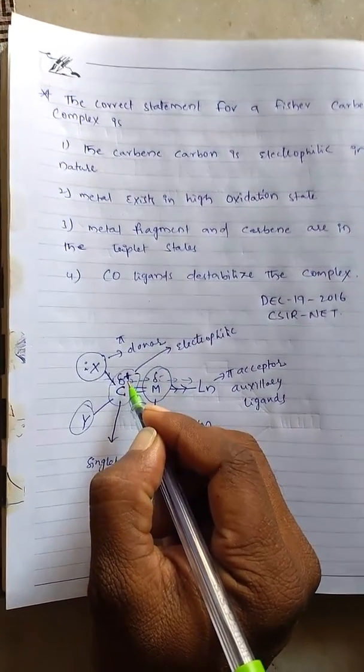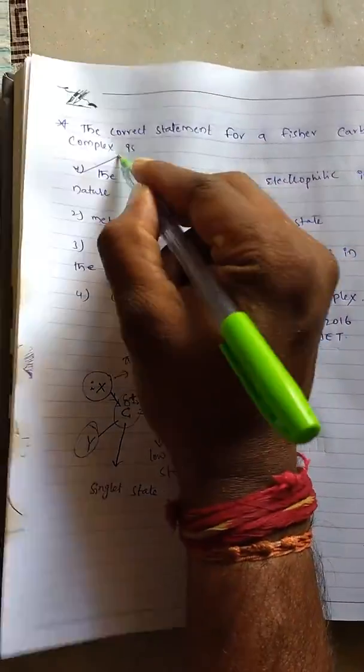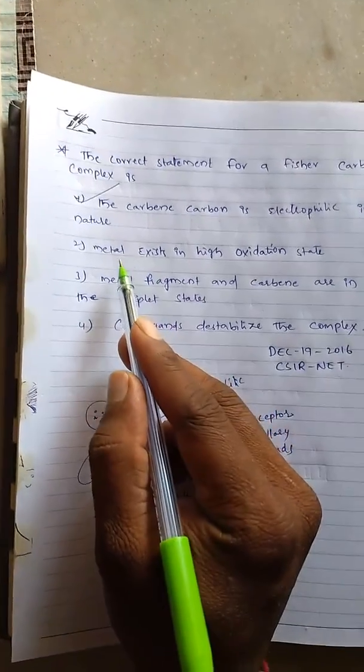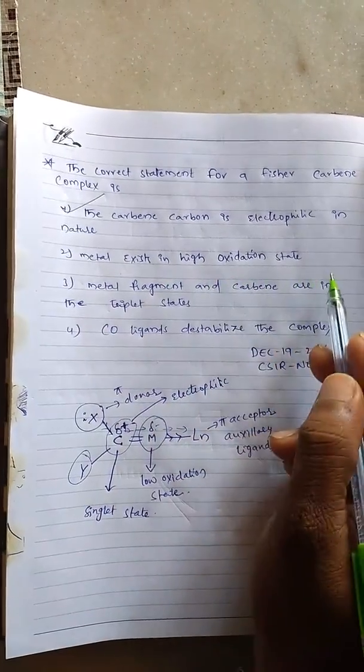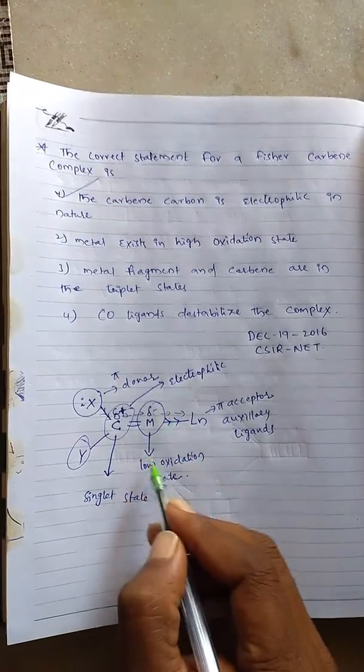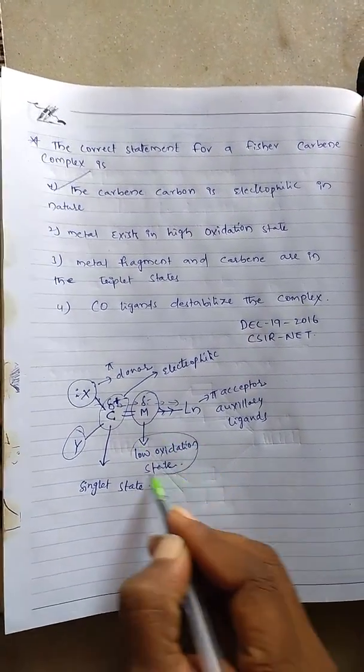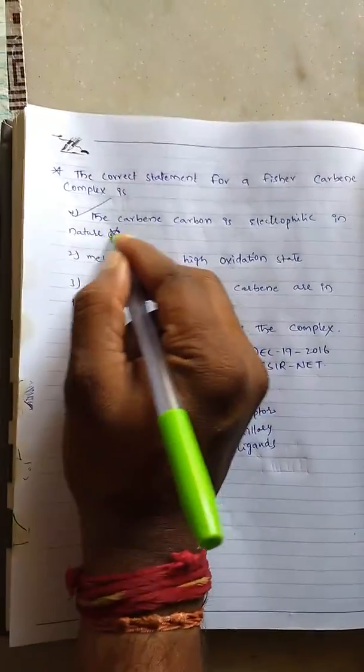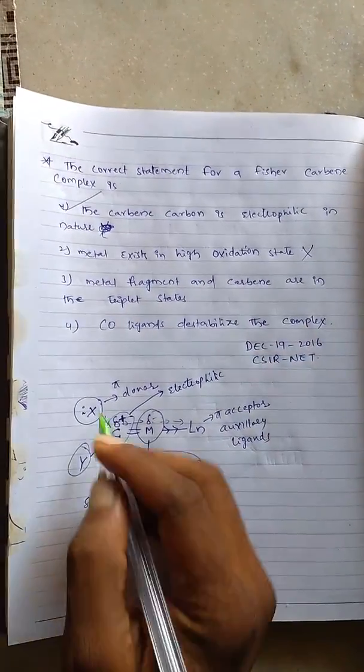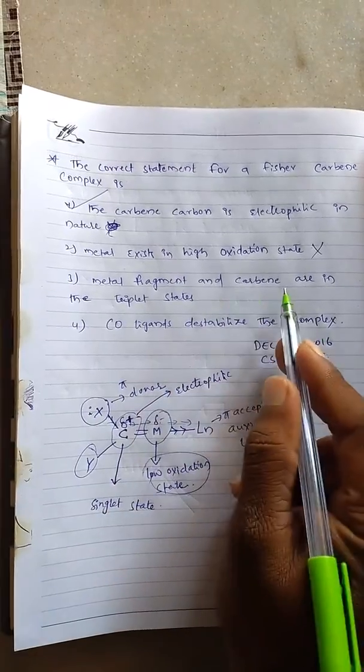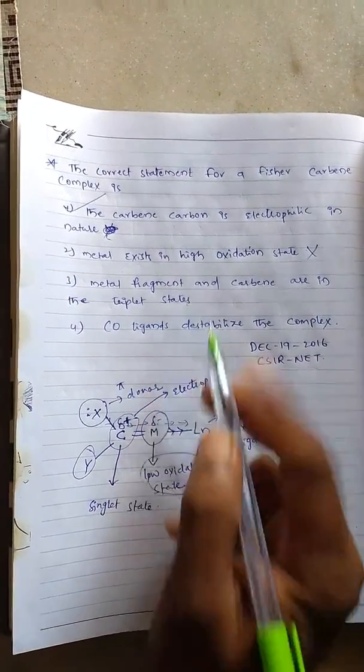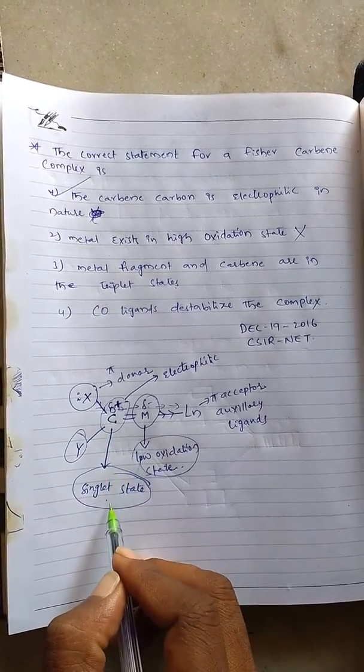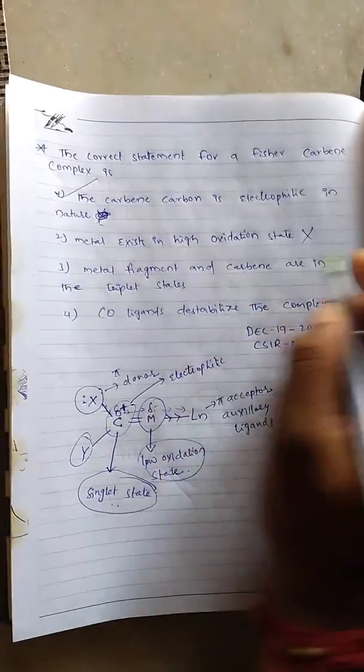So what about the other three? Second option: metal exists in high oxidation state. But in Fisher-Carbine the metal should be in low oxidation state, so this is wrong. Third one: metal fragment and carbine are in the triplet state. We already stated the singlet carbine of Fisher-Carbine is in singlet state, so this is also wrong.